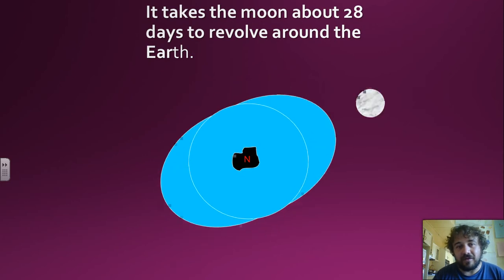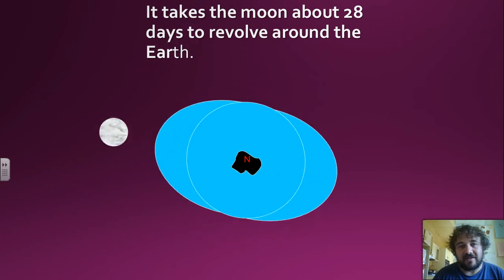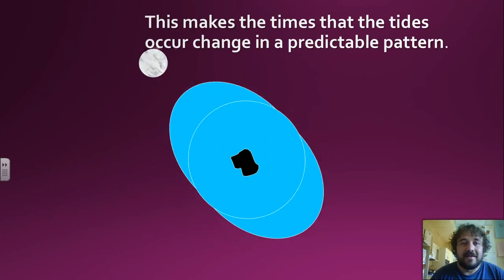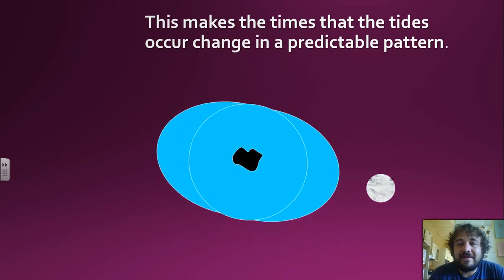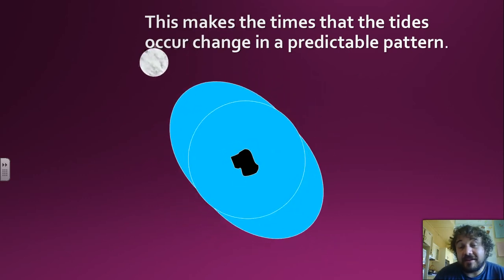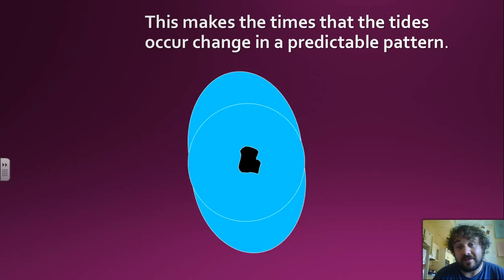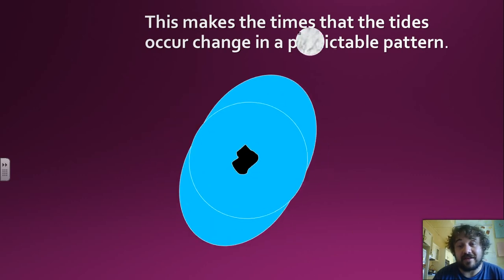So it takes 28 days. Therefore, your tide cycle occurs in 28 days. Basically, it's predictable. We can see where it's going to happen, we know where it's going to happen. In actual fact, we can predict the tides to the minute.